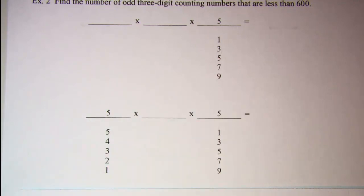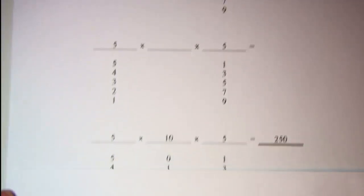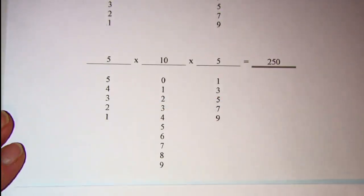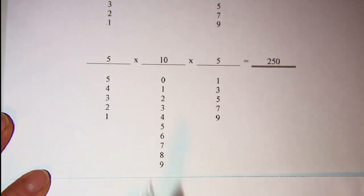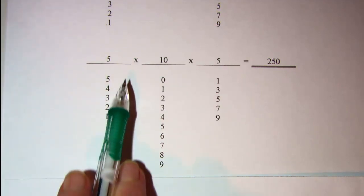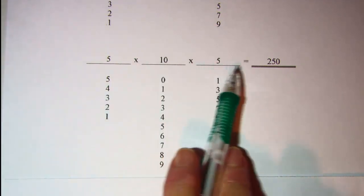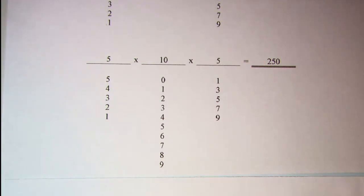Now notice it's not saying anything about repetition, so I am allowed to repeat digits. And then finally for the middle spot, there's no restriction on the middle digit. So I can choose 0 through 9. And the fundamental counting principle says then that I multiply those number of ways together. And I have 5 times 10 times 5, which is 250.